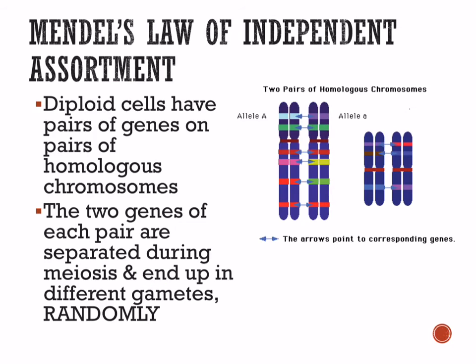Mendel's second law, developed later, is the law of independent assortment. This has to do with the fact that cells are diploid — they have pairs of genes on pairs of homologous chromosomes. The two genes of each pair are separated during meiosis and end up in different gametes randomly. So the law of independent assortment tells us that homologous chromosomes all segregate randomly during meiosis.